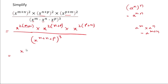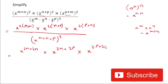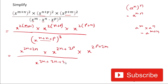In the numerator, we multiply 2 by (m+n) to get (2m+2n), then x to the power (2n+2p), and x to the power (2p+2m). In the denominator, we multiply 3 by the power value and write x to the power (3m+3n+3p).